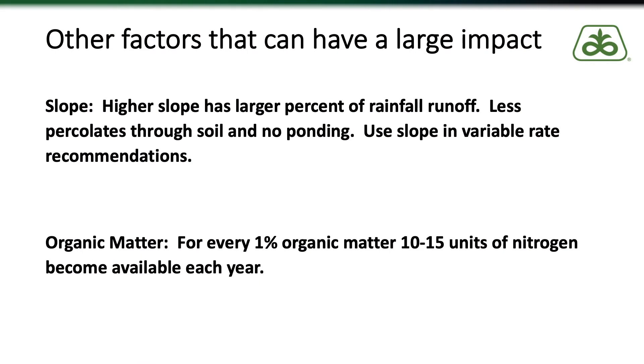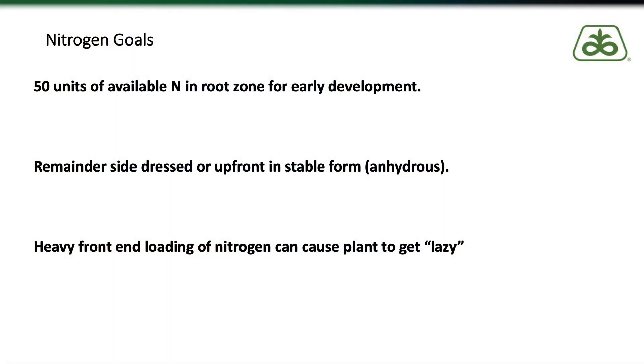Another factor that greatly influences nitrogen use efficiency here in Northeast Iowa is soil organic matter. For every 1% organic matter on your soil test, you can count on about 10 to 15 units of nitrogen being released per percent throughout the growing season. So if you have a soil with 5% organic matter, you will get around 50 to 75 pounds of nitrogen released every year into your crop production system. Be sure to make those adjustments when determining what rate to use in a particular field.